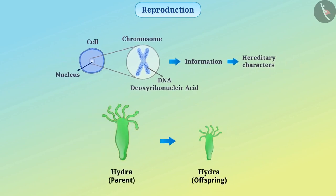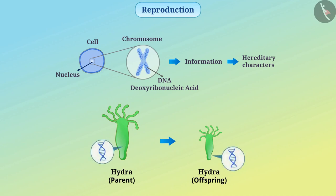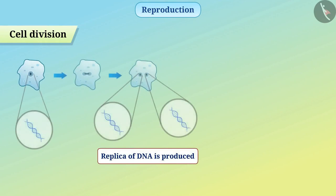Because of this reason, the characters of offspring seem similar to the parents, and therefore every organism can produce an organism similar to it. Basically, the main event in reproduction is producing a replica of DNA.